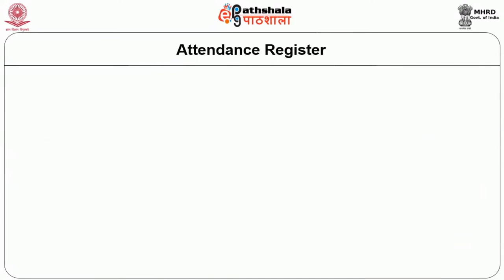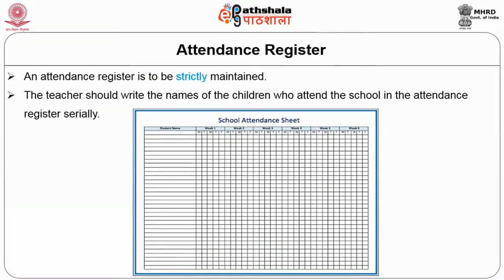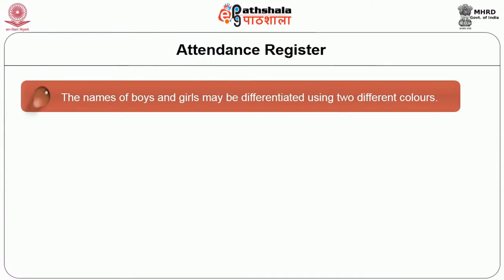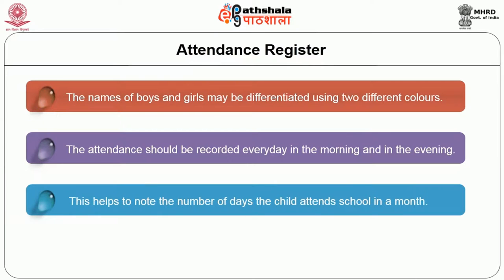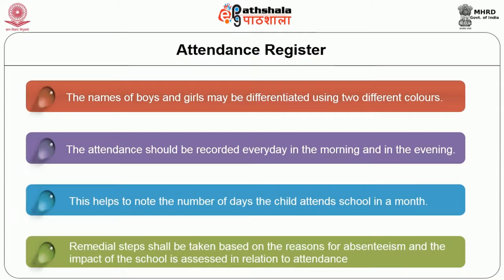The Attendance Register is to be strictly maintained. The teacher should write the names of children who attend the school serially, and the names of boys and girls may be differentiated using two different colours. The attendance should be recorded every day in the morning and in the evening. This helps to note the number of days the child attends school in a month. Remedial steps shall be taken based on the reasons for absenteeism.